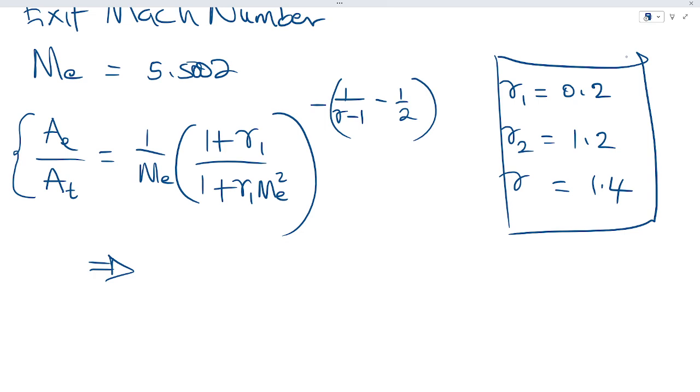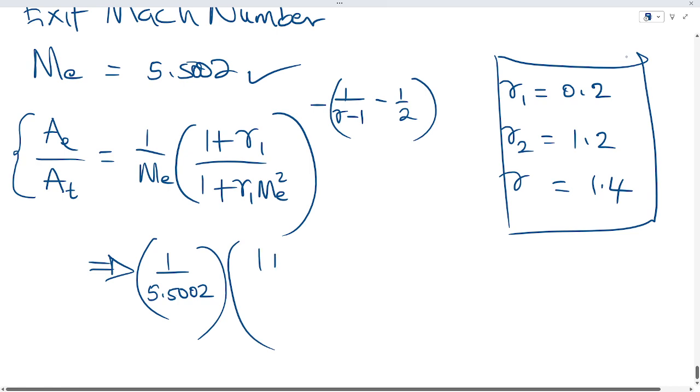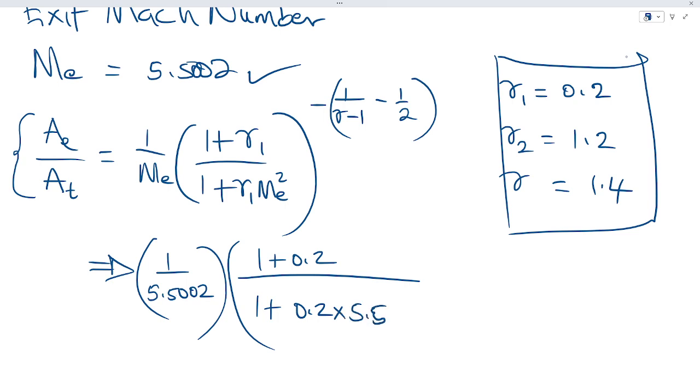Don't let us forget these entries always, and we have Me to be 5.502. So that becomes one over 5.502, the bracket of one plus 0.2, one plus 0.2 times 5.502 squared, everything raised to power negative 1.4 minus 1 minus half.